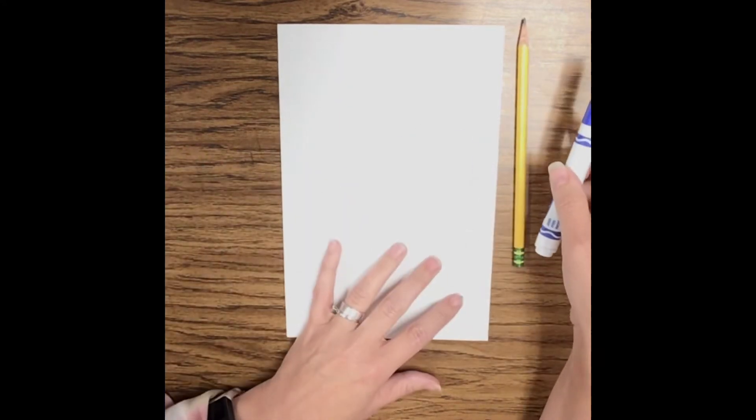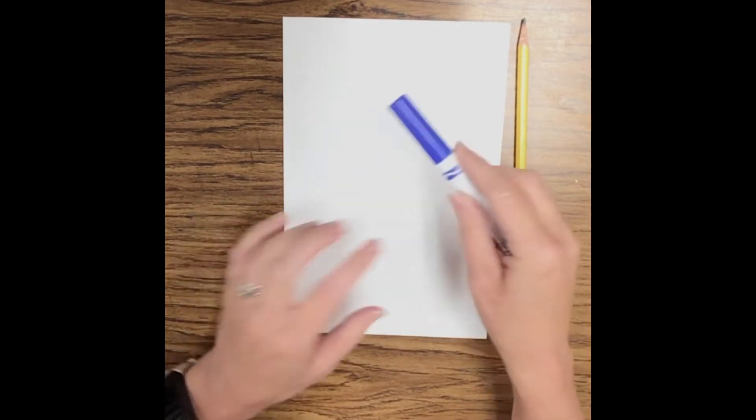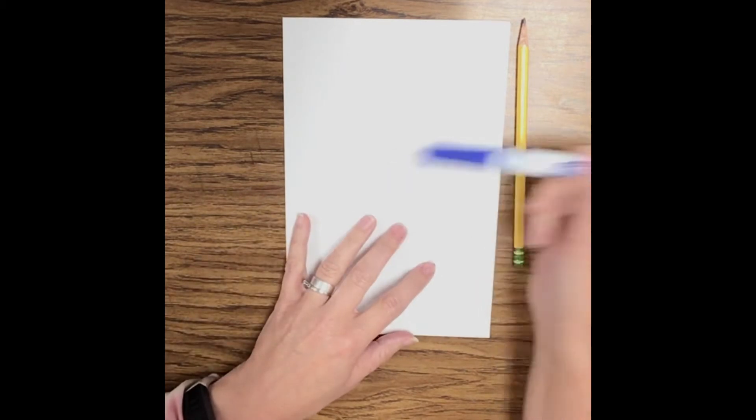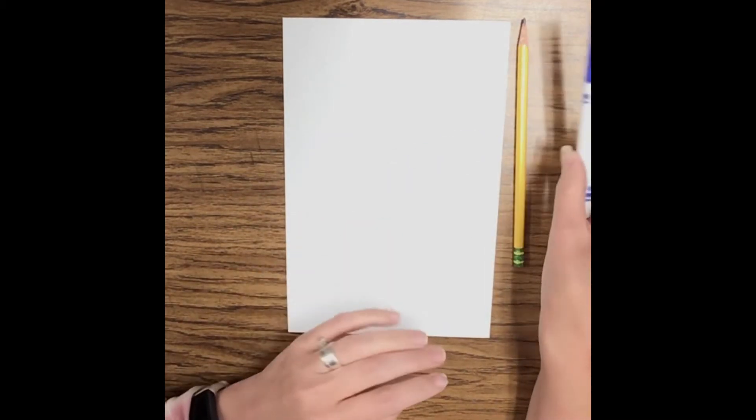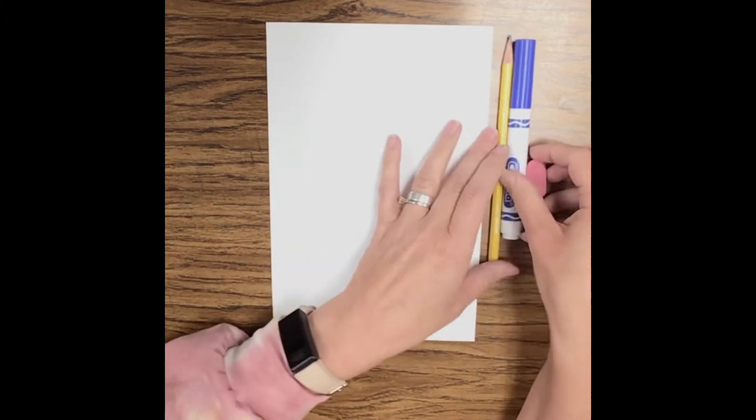So for today's lesson you're gonna need a pencil, you're gonna need something like a marker that has a flat top because we're actually gonna use this cap to transfer, a pencil not necessarily for coloring right now, probably an eraser, and then a little later for coloring you can do crayon, markers, color pencils, whatever you've got to color in.